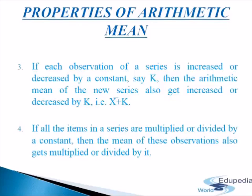The fourth property: if all the items in a series are multiplied or divided by a constant, then the mean of these observations also gets multiplied or divided by it. For example, the arithmetic mean of 3, 5, 8, 12 is 7. If each item is multiplied by 5, giving 15, 25, 40, 60, the new mean will also become 5 times the original mean, giving a new mean of 35.